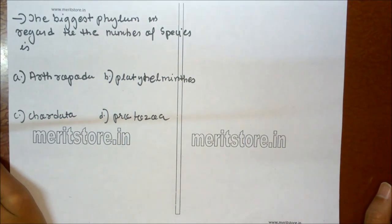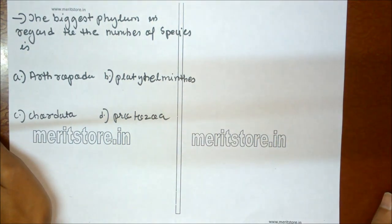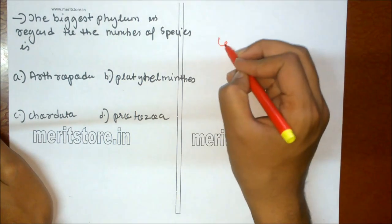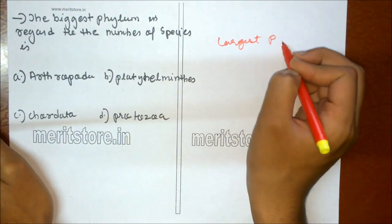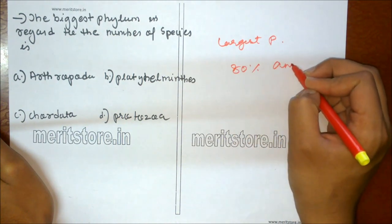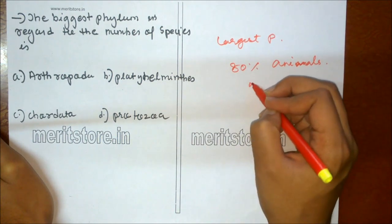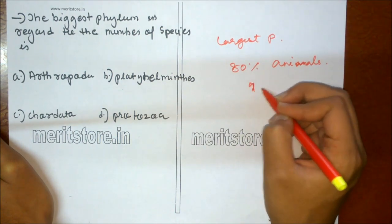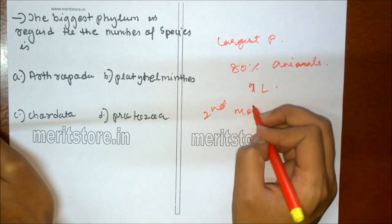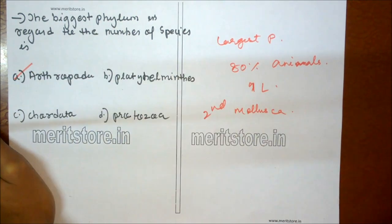The biggest phylum in regard to number of species is: A Arthropoda, B Platyhelminthes, C Chordata, D Protozoa. Arthropoda is the largest phylum and includes 80% of the total animals present in Kingdom Animalia — about 9 lakh species. The second largest phylum is Mollusca. So option A is the correct answer.